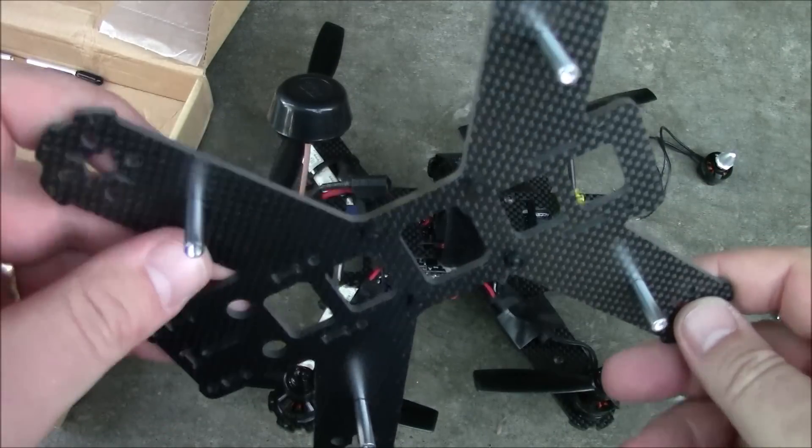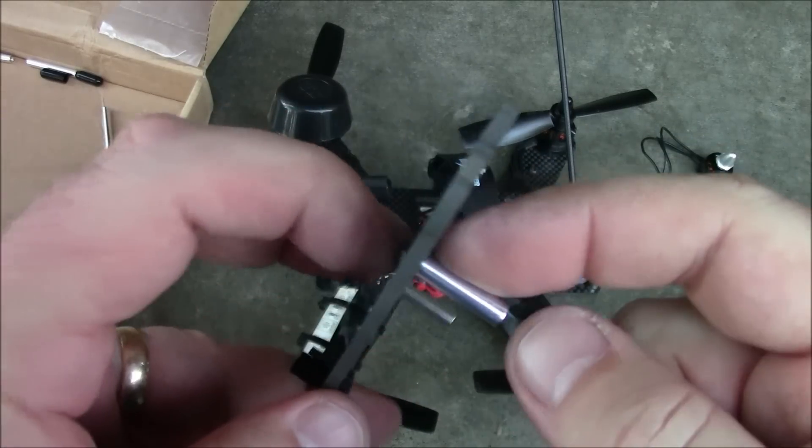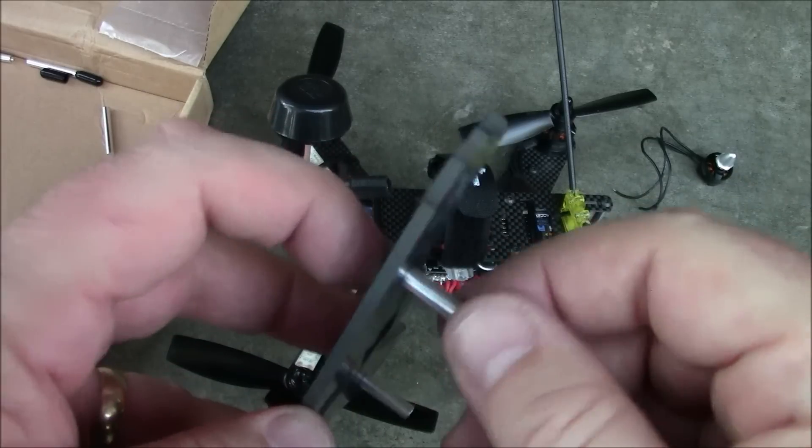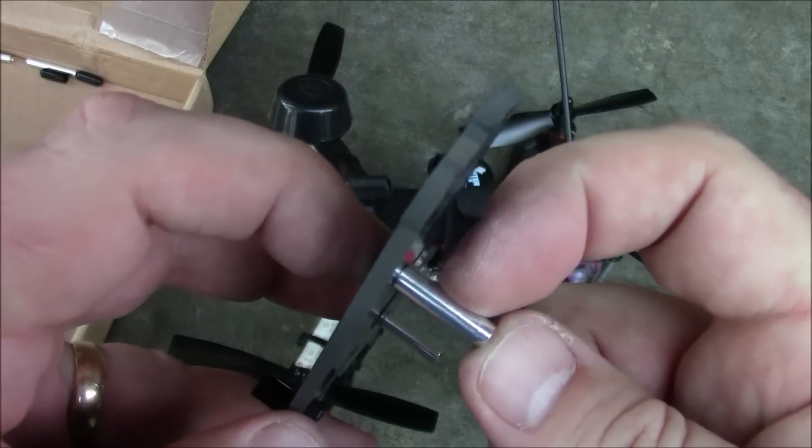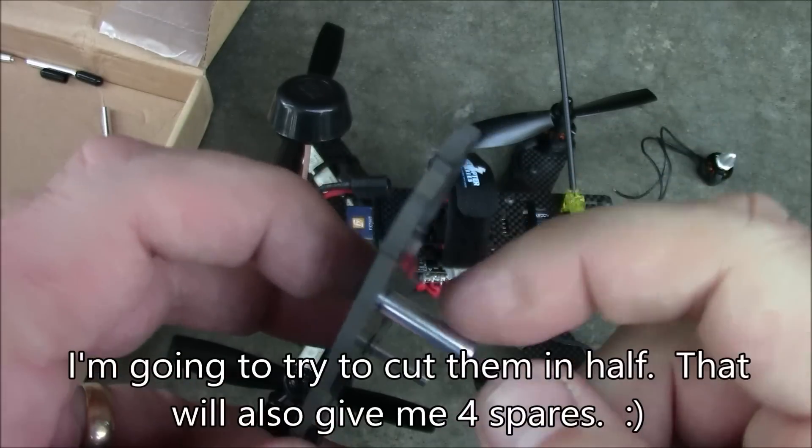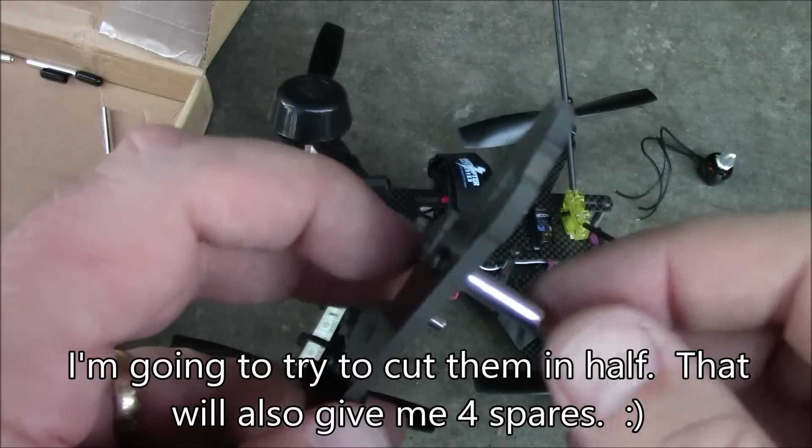So before I get too far along in this build I was going to tell you a couple things. First of all the screws that go into these legs are very short and so when you crash this thing has a tendency to strip out those screws. It'd be kind of nice if these were a little bit shorter, maybe half this length, then they wouldn't have so much ability to bend those screws or rip them out.